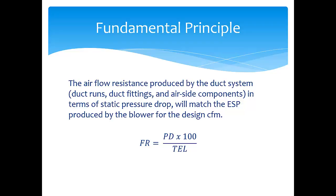This all comes down to the fundamental driver for duct sizing: the pressure drop causing resistance to airflow must match the external static pressure produced by the blower for the design CFM. This airflow resistance causing pressure drop comes from the duct runs, the fittings, and any air-side components. This is captured in what's called the friction rate equation, so let's look at this in more detail.